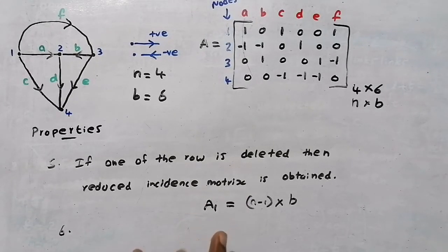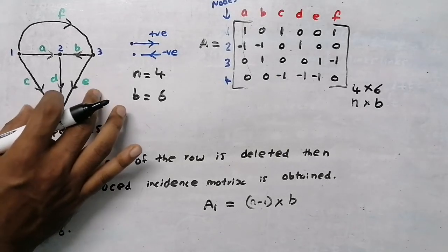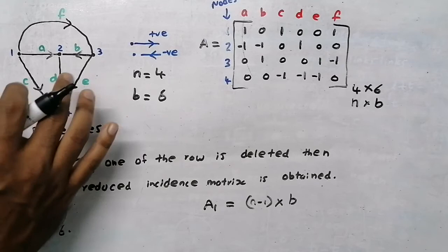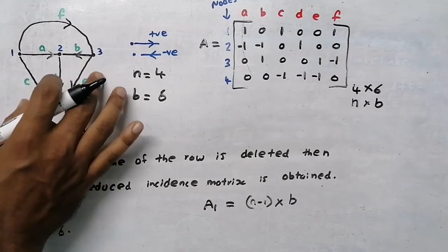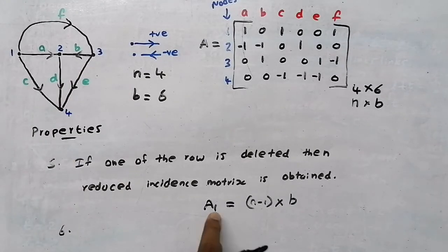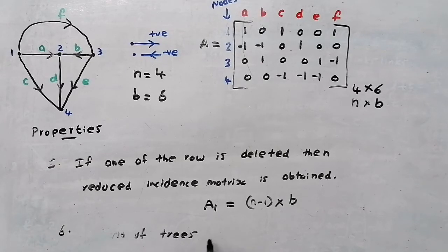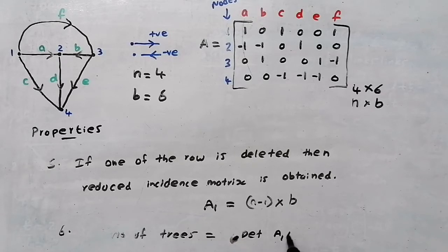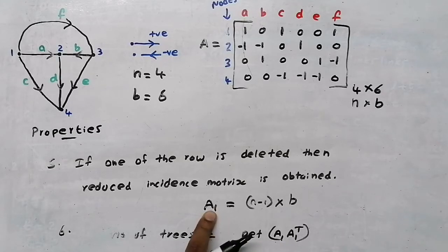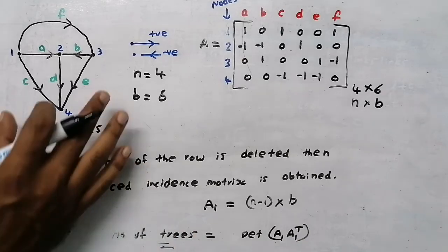Property 6: from the incidence matrix we can find the number of trees that can be drawn from the graph. To find the number of trees, we use the reduced incidence matrix A1. The number of trees is found by computing the determinant of the matrix product A1 times A1 transpose.